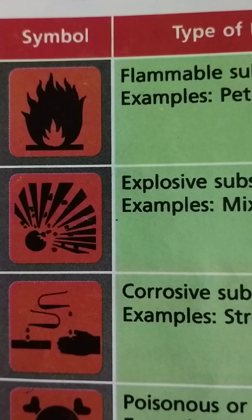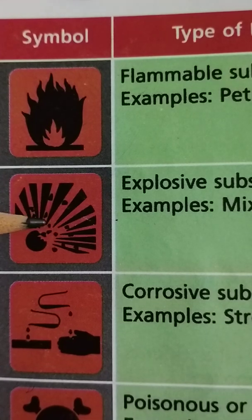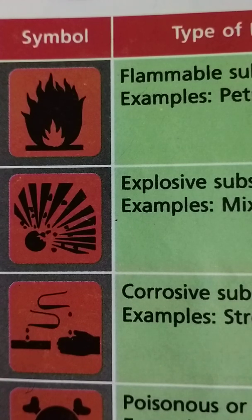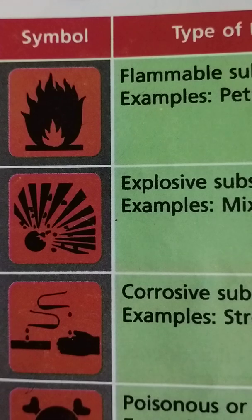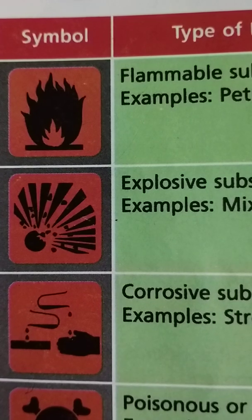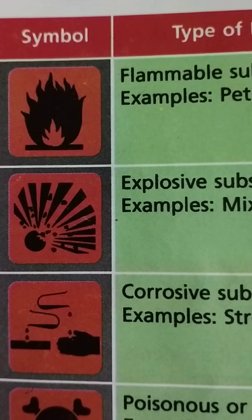The second symbol is used for explosive substances. An explosive substance is a reactive substance that contains a great amount of potential energy that can produce an explosion if released suddenly, accompanied by the production of light, heat, sound, and pressure. Examples include a mixture of hydrogen and air, and a common example is an aerosol can. Explosive substances usually explode when heated or lit, so we must use them according to instructions and keep them under low temperature.